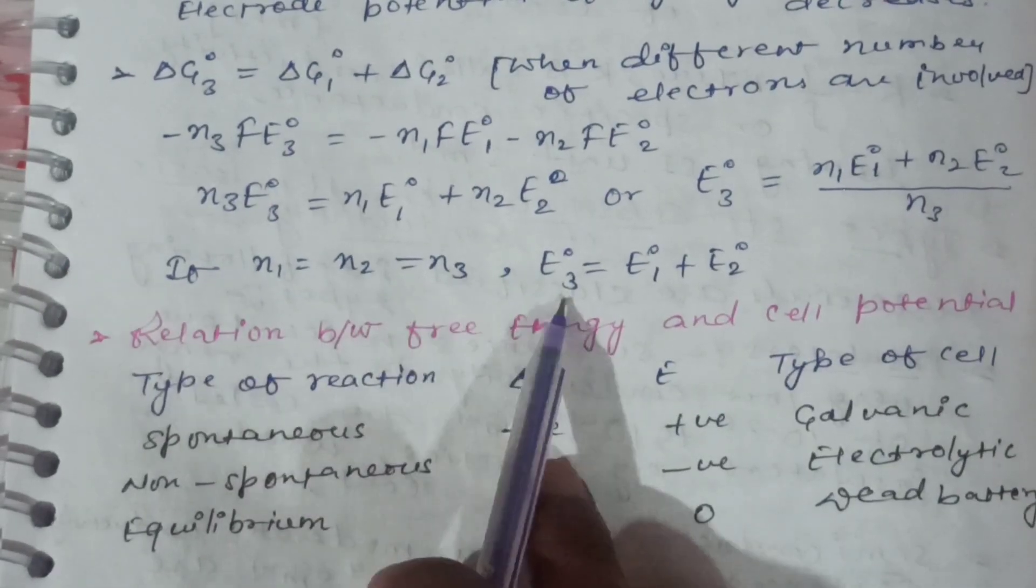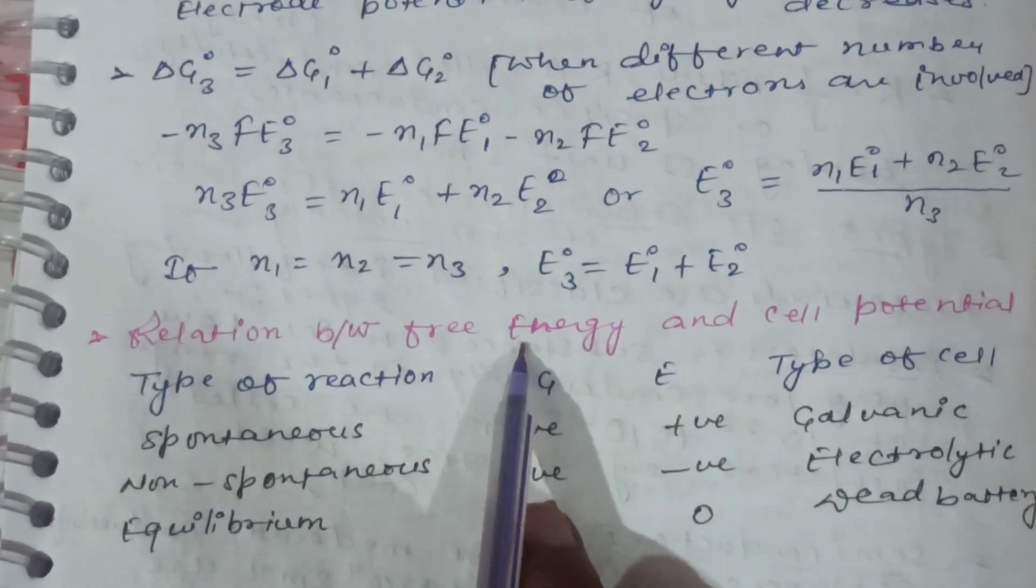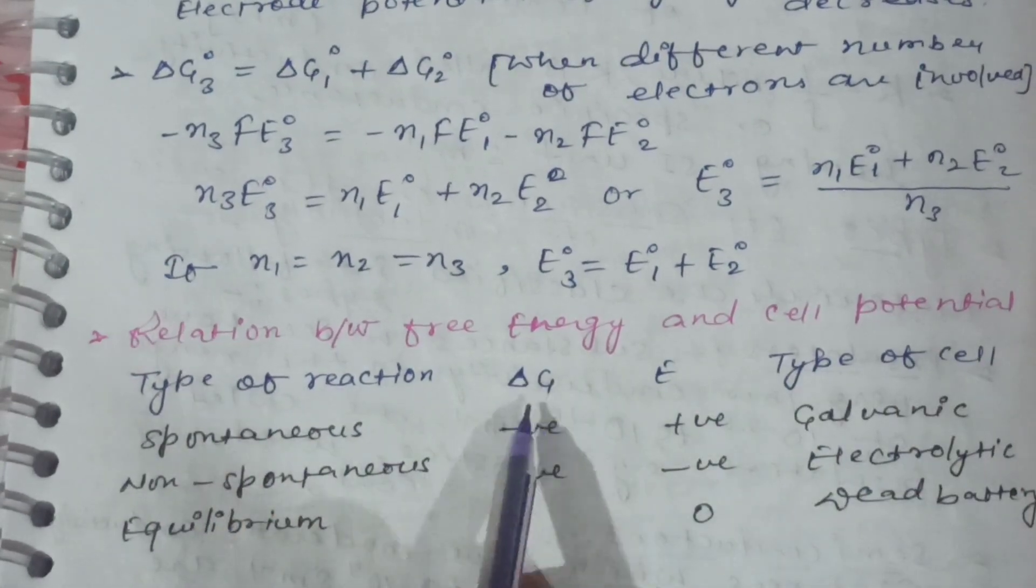If n₁ is equal to n₂ is equal to n₃, then E°₃ is equal to E°₁ plus E°₂.